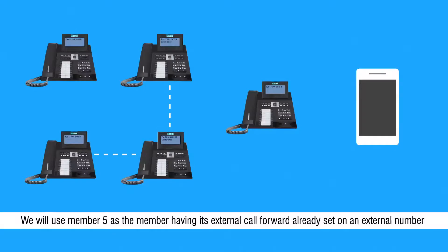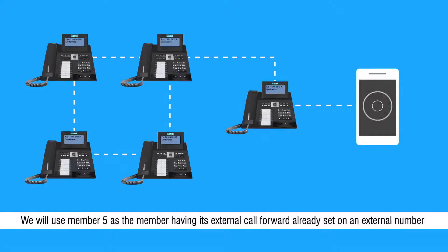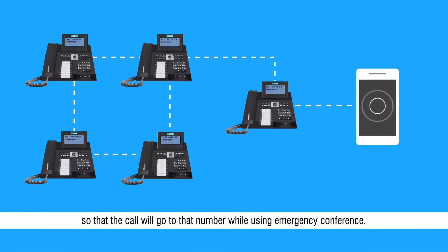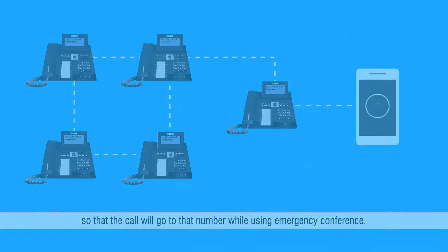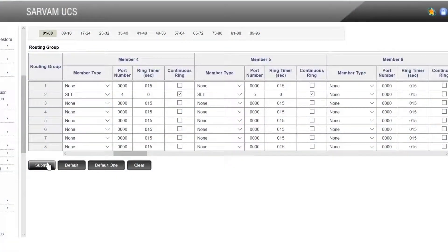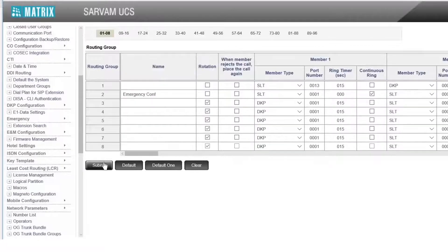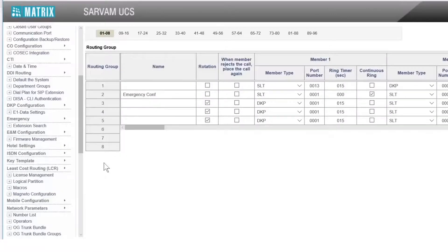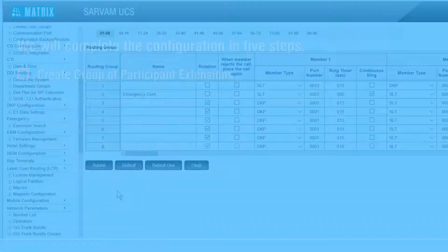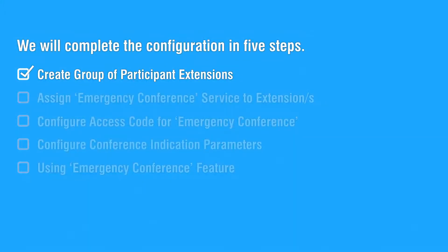We will use member 5 as the member having its external call forward already set on an external number, so that the call will go to that number while using emergency conference. This completes the first step.